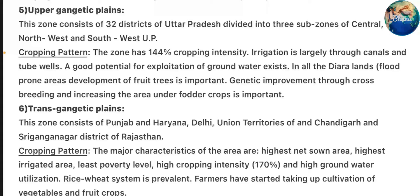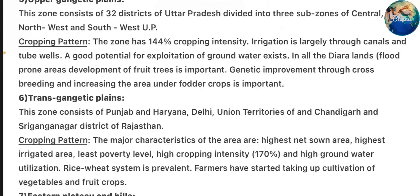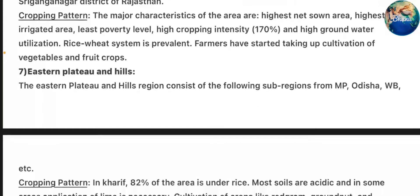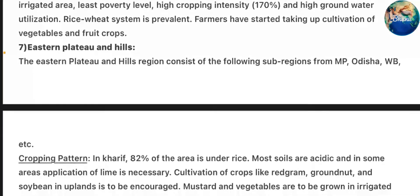Zone 6 – Trans-Gangetic Plains: This zone consists of Punjab, Haryana, Delhi, Union Territory of Chandigarh, and Sri Ganga Nagar district of Rajasthan. Cropping pattern: the major characteristics are highest net sown area, highest irrigated area, least poverty level, high cropping intensity, and high groundwater utilization. Rice-wheat system is prevalent. Farmers have started taking up cultivation of vegetables and fruit crops.